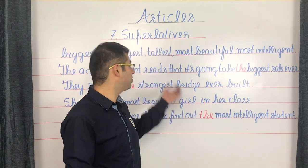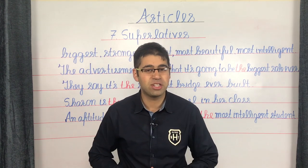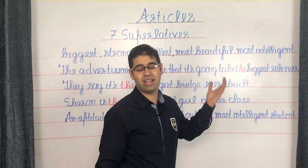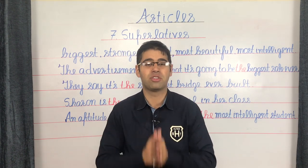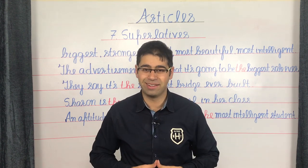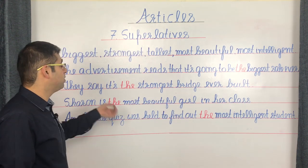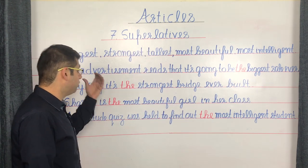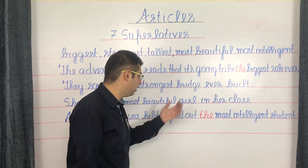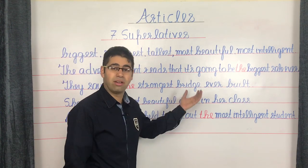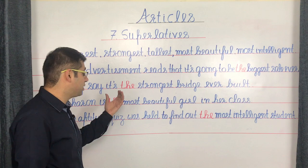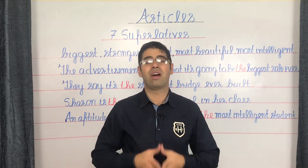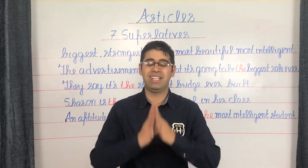Rule number 7 is the rule of superlatives. Superlatives are the strongest degree of adjectives — biggest, strongest, tallest, most beautiful, most intelligent, and so on. The rule is that whenever you wish to mention a superlative in a sentence, you always do that along with the article THE. Examples: 'It's going to be the biggest sale ever.' 'It's the strongest bridge ever built.' 'Sharon is the most beautiful girl in her class.' 'An aptitude quiz was held to find out the most intelligent student.'